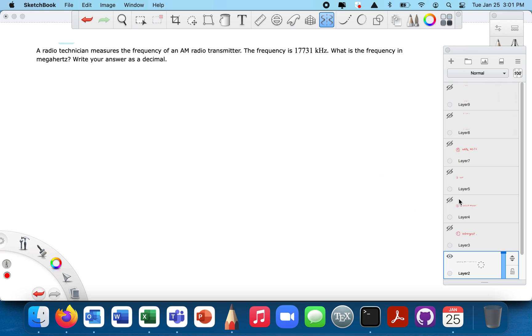So I'm going to show the mechanics of what I'm doing here with this example. First thing I'm going to do is interpret the question. And by interpret, I mean I'm going to make some notes somewhere in my paper about what I'm reading. A radio technician measures the frequency of blank. I don't see anything there. Frequency is this. I see something there. Our frequency is 17731 kilohertz.